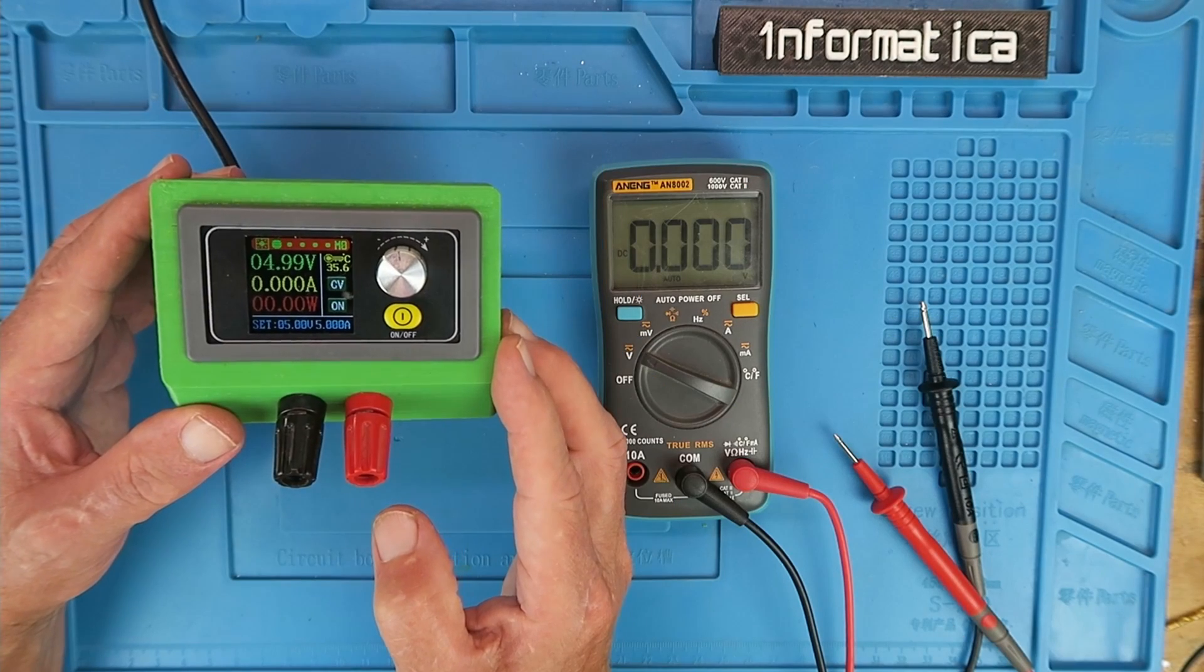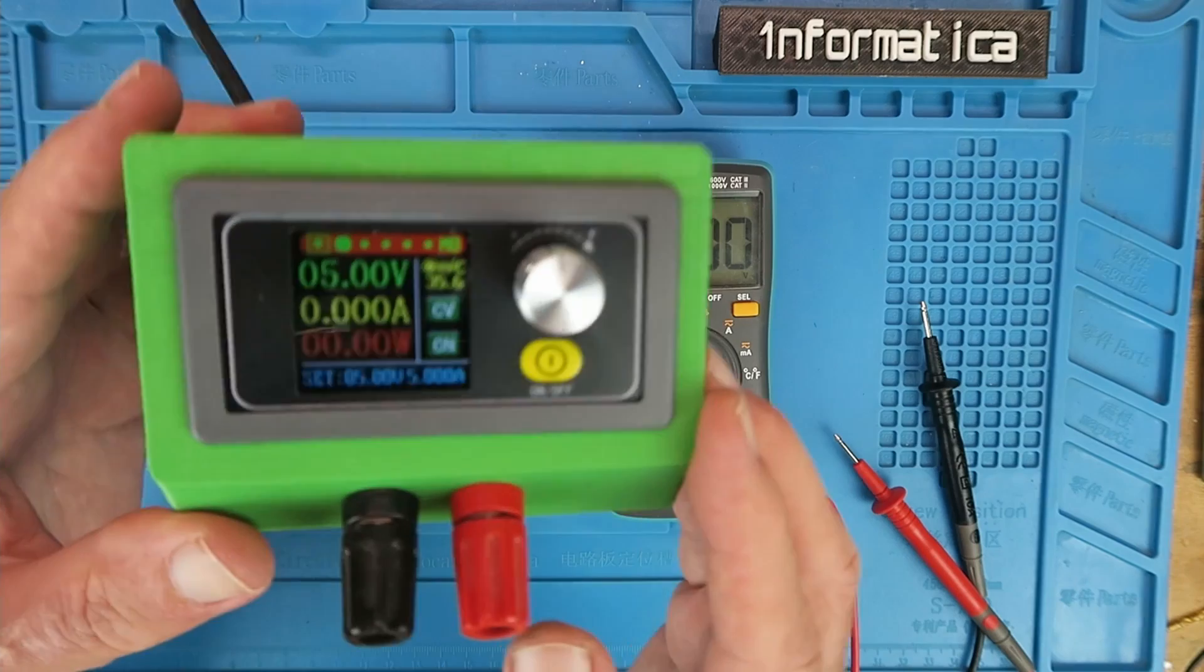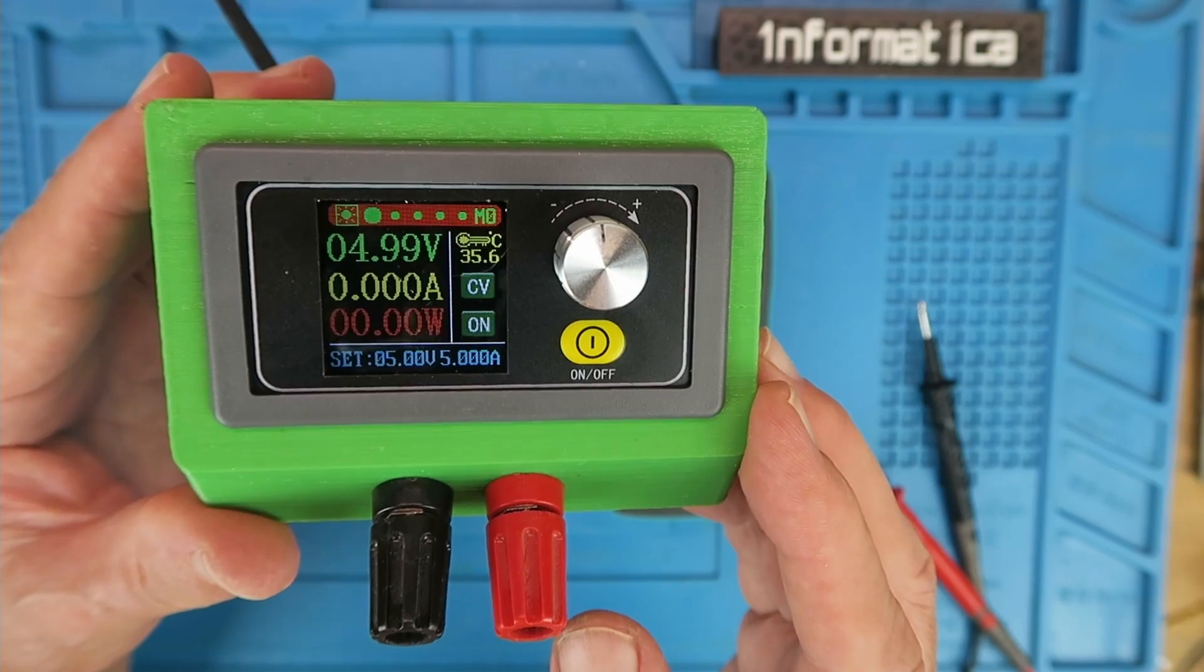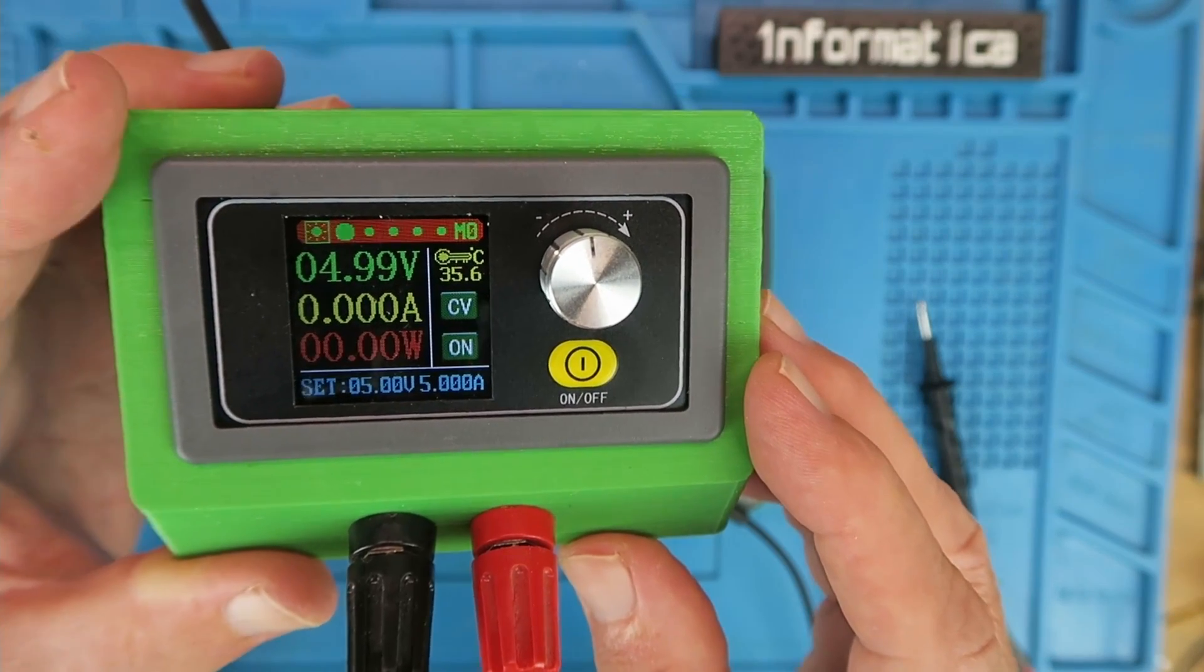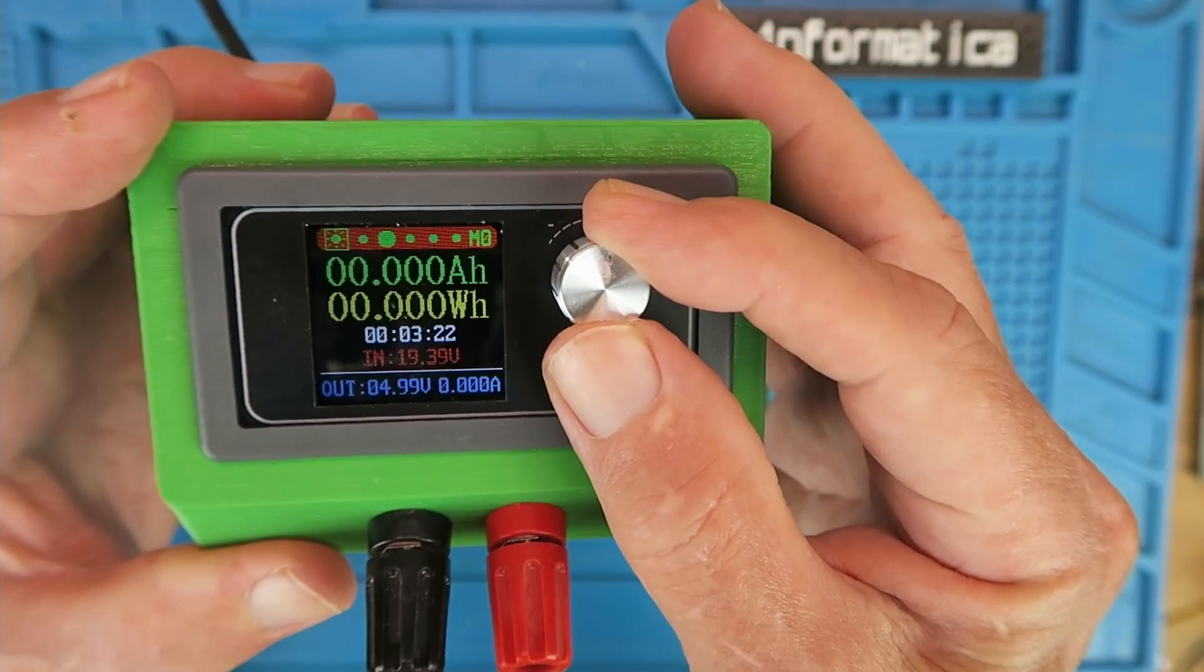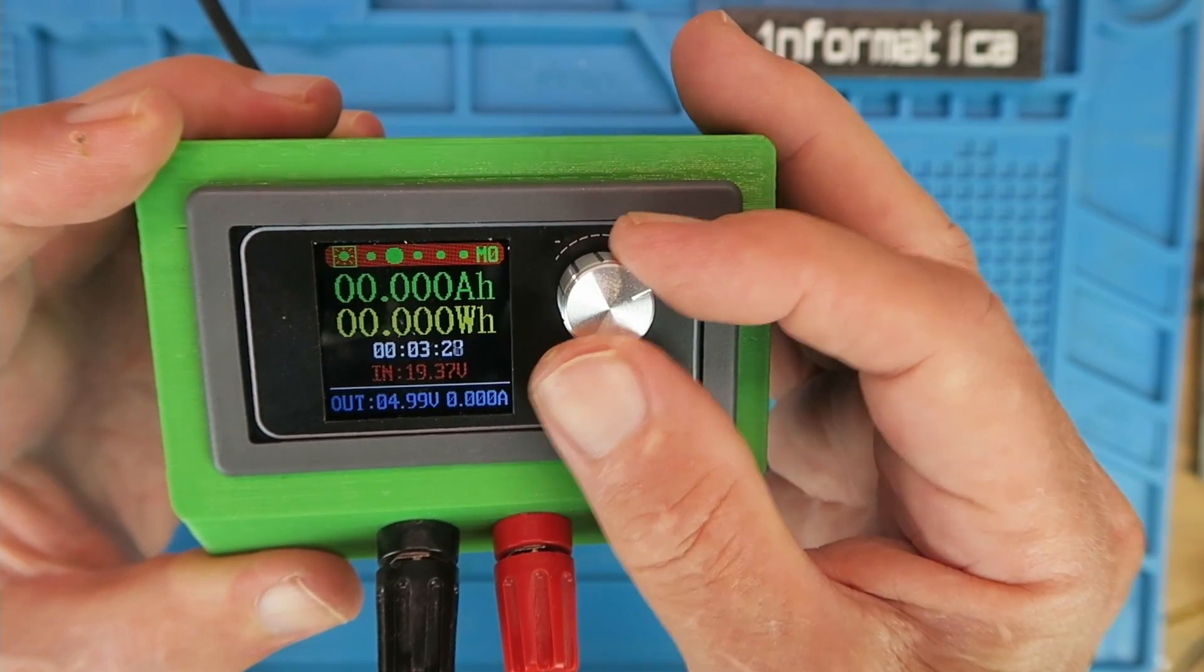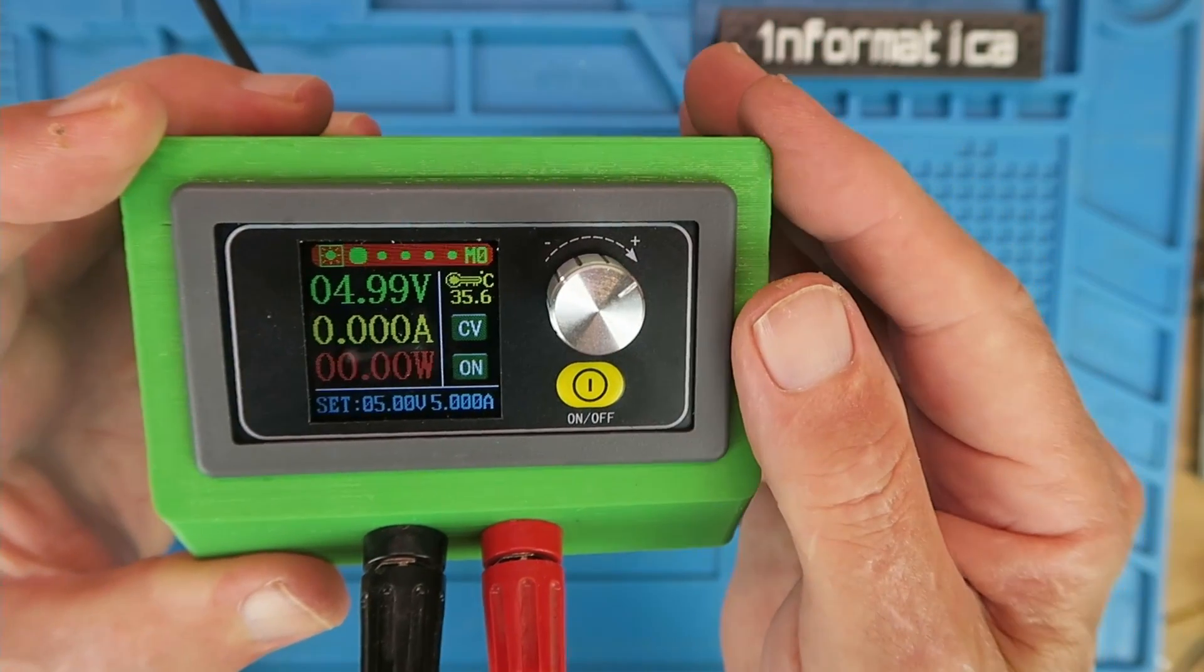Here then the completed unit. Nice colorful display there. Nice and bright even under the video lights which I have on. There are some seven pages detailing all the information that you can get on the display here. I don't intend to go through all of that. I'll just go through the basics.